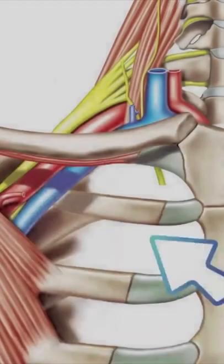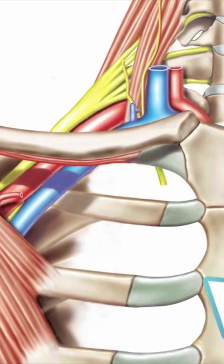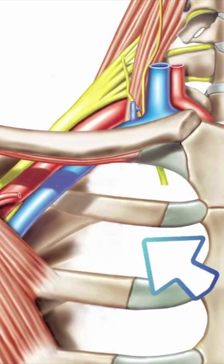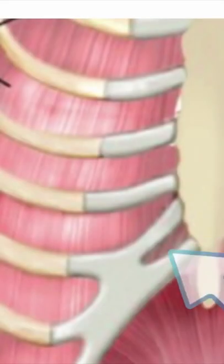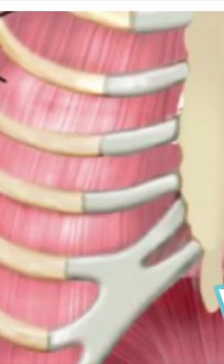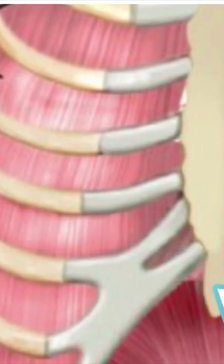A rib subluxation means that the ribs have misaligned themselves, creating some irritation to the nerve that runs through that area. As you can see from the diagram, there is tissue known as your intercostal muscles that will get irritated thanks to that nerve, creating a little neuritis. From there, we get that pain and discomfort on inhalation and exhalation — when we're actually breathing in and out.